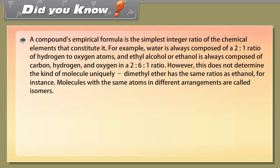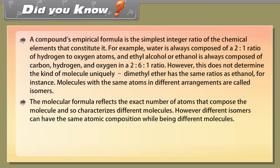The formula unit mass of a substance is the sum of the atomic masses of all atoms in a formula unit of a compound. Example, formula unit NaCl. Its formula unit mass can be calculated as 1 into 23 plus 1 into 35.5, which equals 58.5 units.